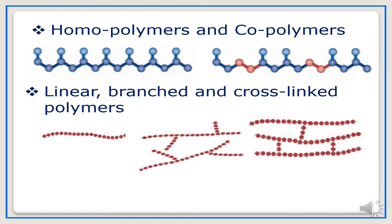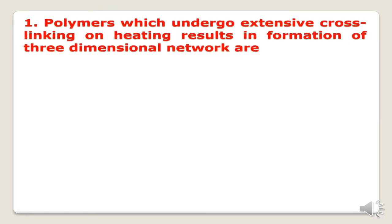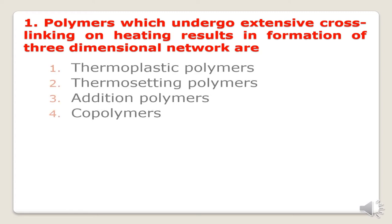Now we will see some questions from polymer chemistry frequently asked in CED. The first question: polymers which undergo extensive crosslinking on heating result in formation of a three-dimensional network. The options are thermoplastic polymers, thermosetting polymers, addition polymers, and copolymers. Since thermosetting polymers are those which, on molding, set into a hard mass and remolding and recycling is not possible, the correct answer is thermosetting polymers.